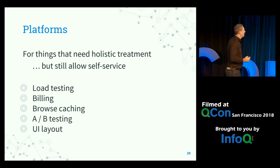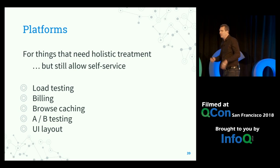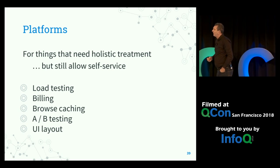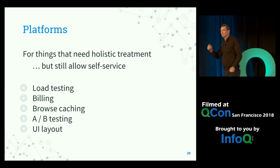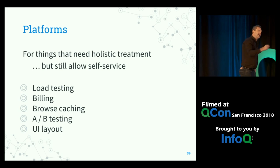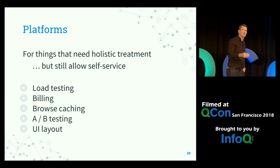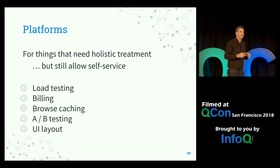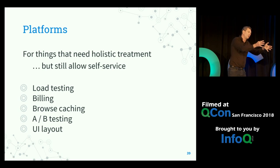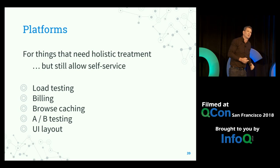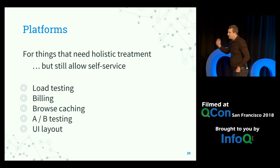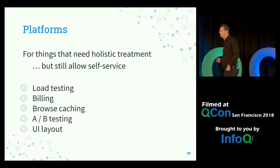One of the things that often happens in microservices environments is you need holistic treatment of things like load testing — you need to be doing browsing as well as playback, logging in, and DVR functionality. But we want teams to not be coupled to each other; we want self-service ability. We build platforms such that load testing has scenarios and people contribute tests to it. For billing, we abstract all of the common logic into a set of capabilities running in microservices, and for every new billing partner such as Sprint, we create one microservice handling all the Sprint-specific logic. Browse caching, A/B testing, UI layout — these are all things at Hulu we built platforms around such that teams could self-service but still contribute to that holistic vision.